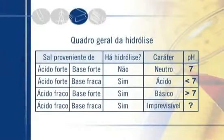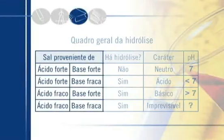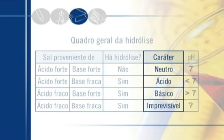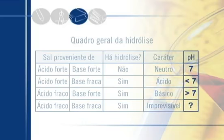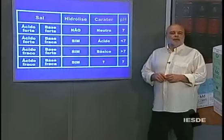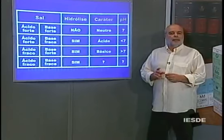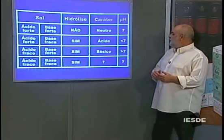Vamos ver o quadrão da hidrólise salina. Esse quadro apresenta quatro colunas. Na primeira, particularizamos o sal e a origem dele: se ele vem de ácido forte ou fraco, de base forte ou fraca. Na segunda coluna, dizemos apenas sim ou não para a hidrólise. Na terceira, o caráter da solução: ácida, básica ou neutra. E finalmente, a coluna do pH, posicionando se é 7, mais que 7 ou menos que 7.